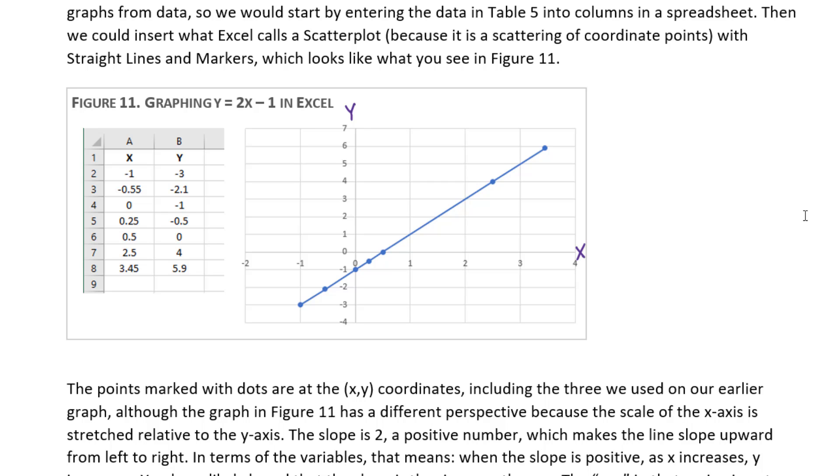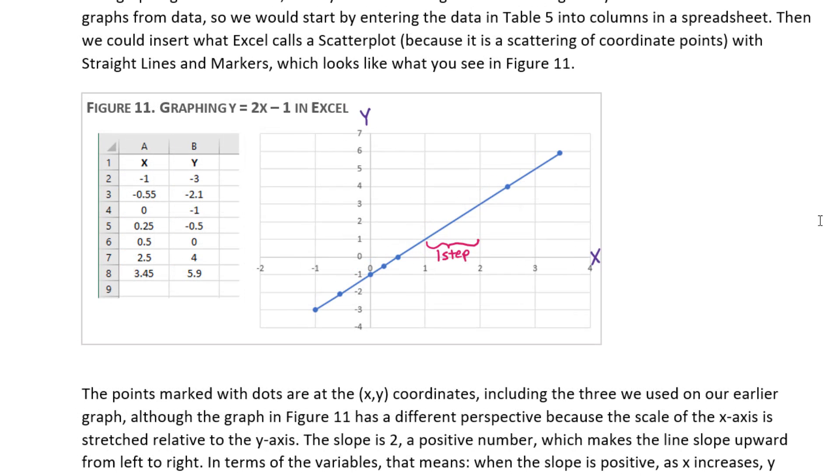How do we see that on this graph? For example, let's take the step in x from 1 to 2, which is one step long. We add 1 to 1 and we get 2. So we moved one step in x, starting here at the beginning of that step and ending here at the end of that step. What happened to y? Well, y went from 1, which is the y-coordinate of the first point, to 3, which is the y-coordinate of the second point. So y went up two steps.